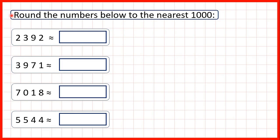We need to round the numbers below to the nearest thousand. First we have 2,392. Because we're rounding to the nearest thousand, we need to find our thousands place, which in a four-digit number is always the first digit.